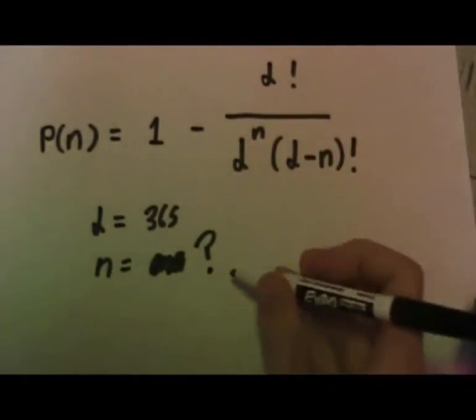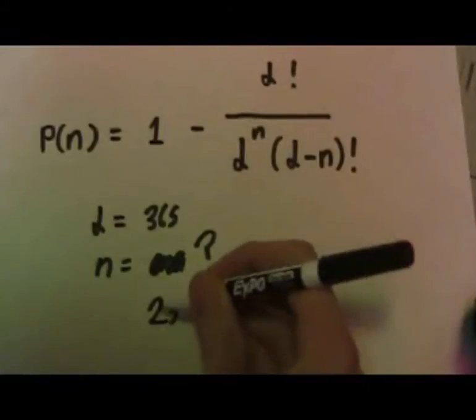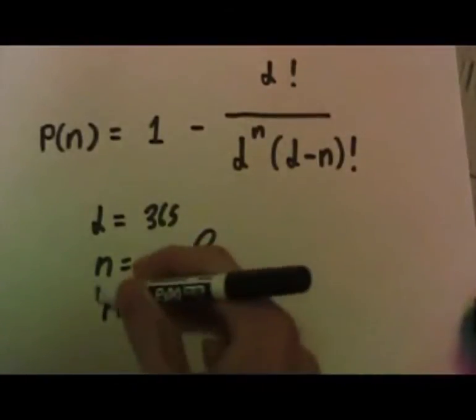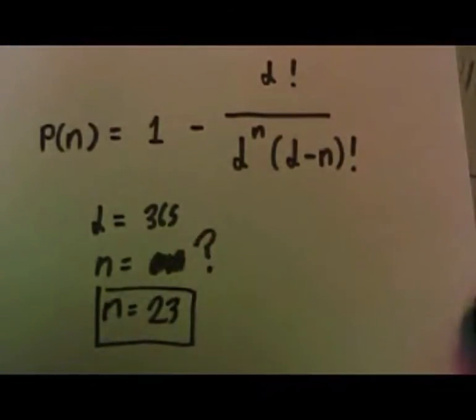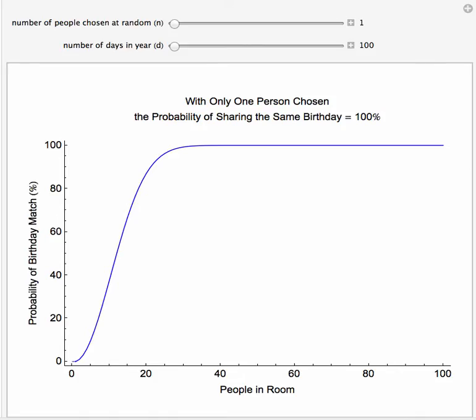Trying different values of n, we find that n equals 23 is the solution. Lower than you expected? We can visualize the birthday paradox in Mathematica along with several interesting variations.